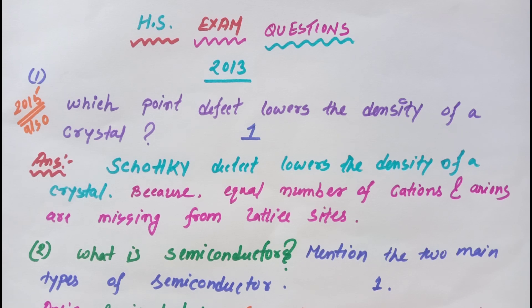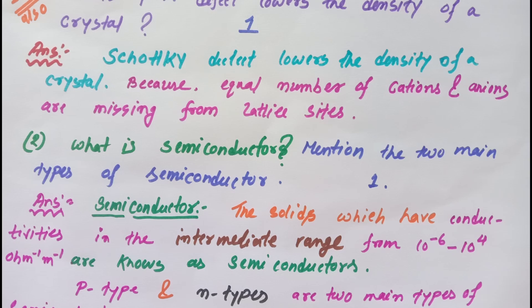See the next question: What is semiconductor? Mention the two main types of semiconductor. The answer is: the solids which have conductivities in the intermediate range from 10^-6 to 10^4 ohm^-1 meter^-1 are known as semiconductors.